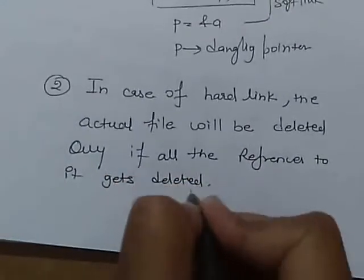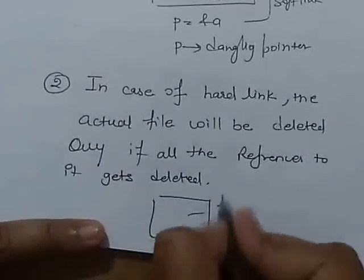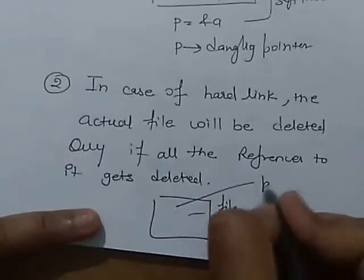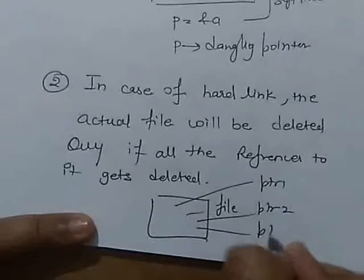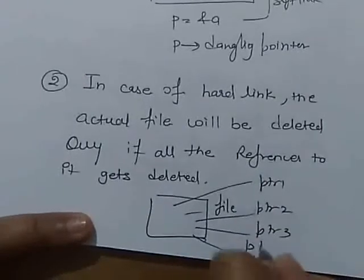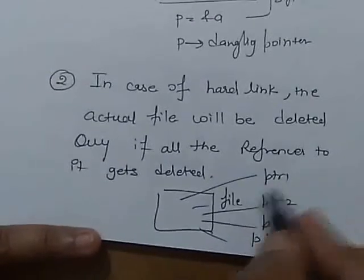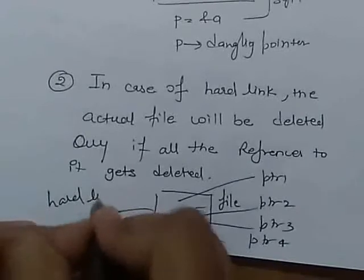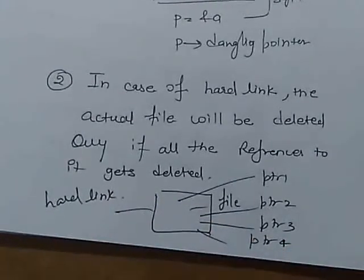It means suppose we have a file and it has four references: pointer one, pointer two, pointer three, pointer four. If all these references get deleted, then the hard link will be destroyed. Hope you understood this. Thank you very much.